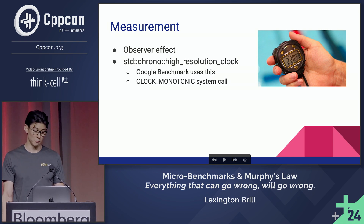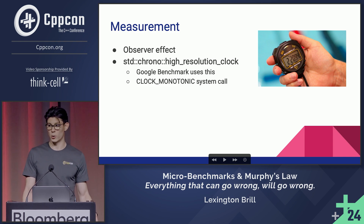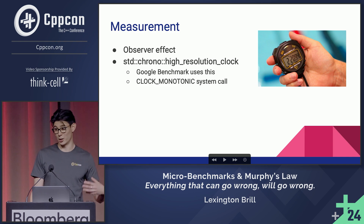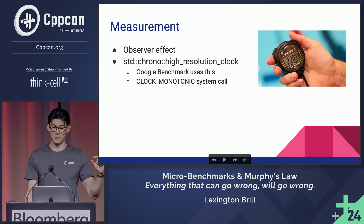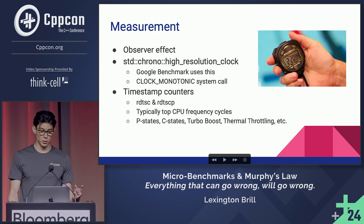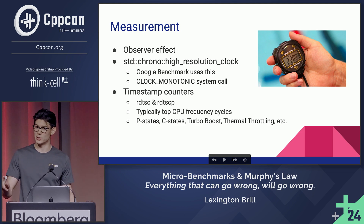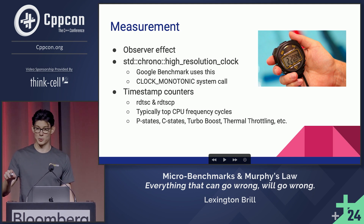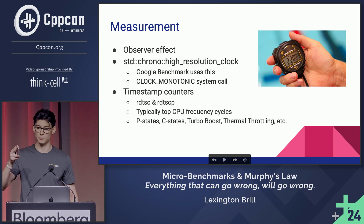The most common way measurements are done is with the std::chrono high resolution clock. This is what Google Benchmark uses, but it requires a clock_monotonic system call. Since we're incurring the observer effect, we want to minimize it. What can work better is timestamp counters — the two we use are RDTSC and RDTSCP, with the latter being out-of-order execution protected, as well as providing the process ID. These use the top frequency cycles for the CPU to set the rate at which cycles are counted.